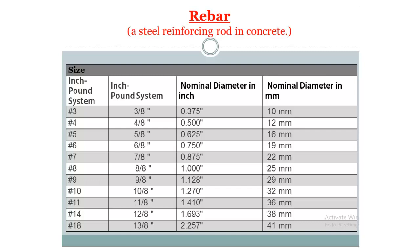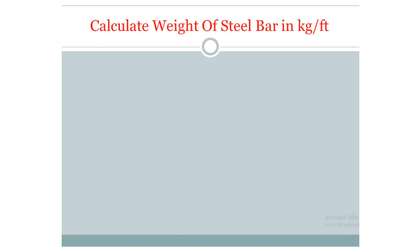The fourth column shows nominal diameter in millimeters. Here, 3-bar equals 3/8 inch or 0.375 inch. Similarly, I am now showing how to calculate the weight of a steel bar using the millimeter equivalent.